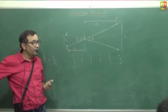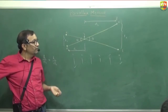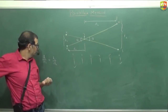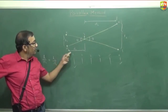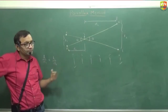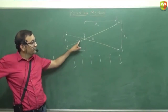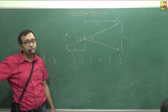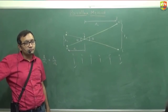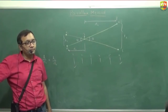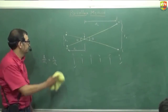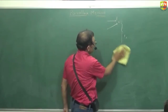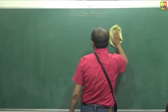We will continue to use the parallax method to calculate distances — arc length divided by the radius is the angle, and both angles are the same. Don't miss any class, it becomes difficult to revise three hours of content in just fifteen minutes.